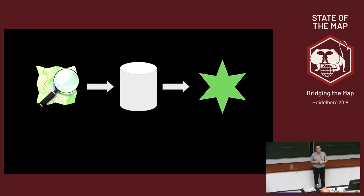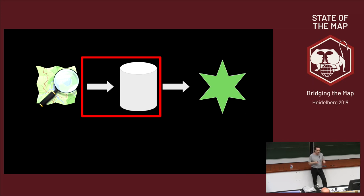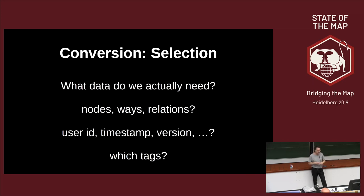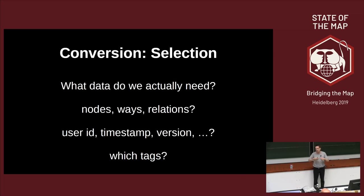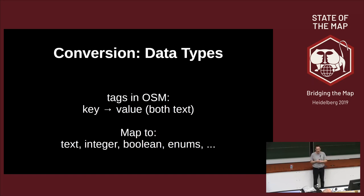The first thing to think about is: what data do we actually need in the database? In many cases we don't need all the data. If you want to render a map, you usually don't care who edited the data or exactly when the last change was made—you can throw that away. In some cases you might want all the data with all the tags, but for a specialized map it makes sense to only import what you need. All the work you don't do saves time and disk space.